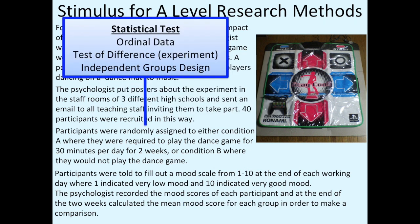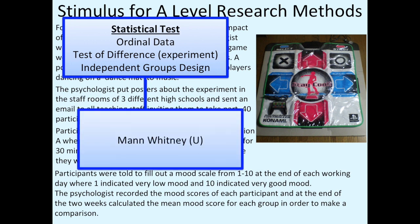We now have all the information we need to know which inferential stats test to choose to test for significance. We know we've got ordinal data, we know it's a test of difference — which means an experiment — and we're looking at the difference in mood of people who play on a dance mat and those who don't. We also know it's an independent groups design. If you pause the video, you can work out which stats test it is — hopefully you got the Mann-Whitney U test.